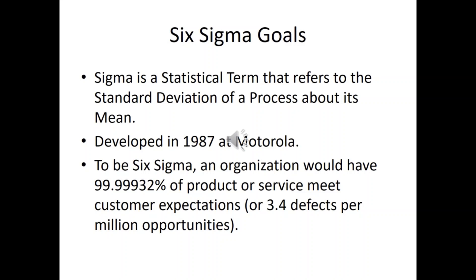To be Six Sigma, it's actually 99.99932% of all products or services meeting customer expectations. Another way to put that is about 3.4 defects per million opportunities.